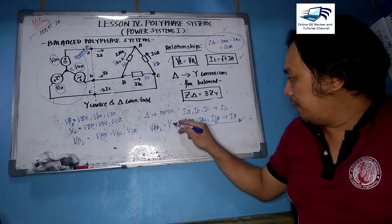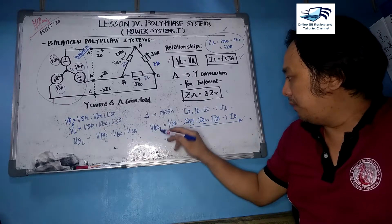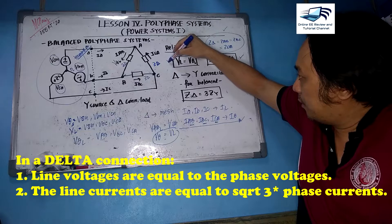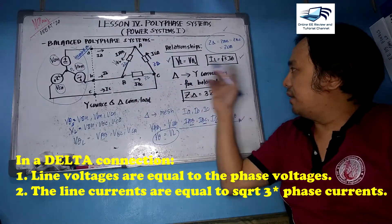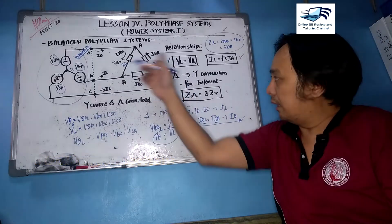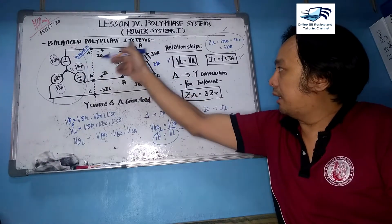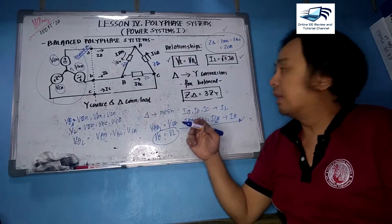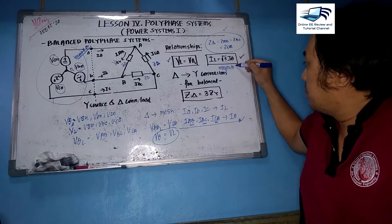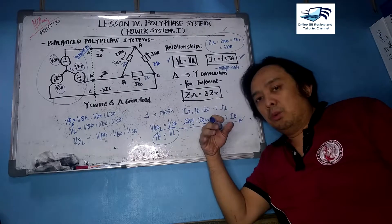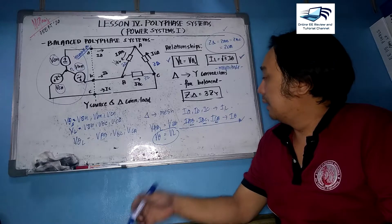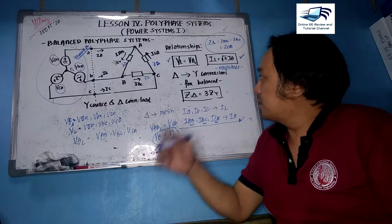For the delta-connected load, the voltage at the load VAB is simply equal to the line voltage VAB — so V-phase equals VL. However, the current is not equal to I-phase because it is not in series; it splits into branch currents IAB and ICA. Therefore, IL equals the square root of 3 times I-phase. Please note these equations are in terms of magnitude, and we will tackle this in more detail in a separate lesson.